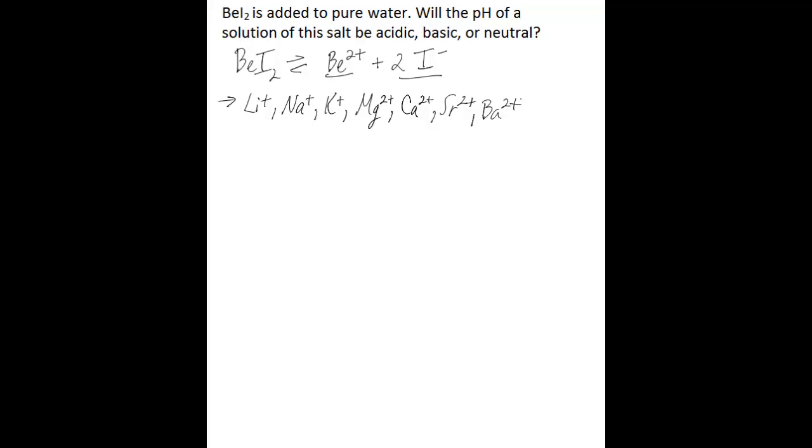Also, anions coming from strong monoprotic acids do not react appreciably with water, and these anions include chloride, bromide, iodide, nitrate, and ClO4-.